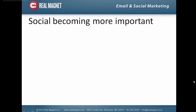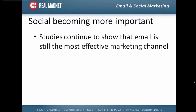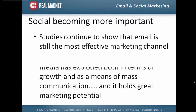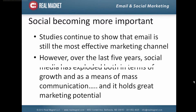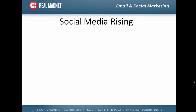Social is becoming much more important in terms of outbound communication. Studies continue to show that email is by far the most effective and dominant channel in marketing and communication. But over the last five years, social has exploded in terms of its reach, and it's becoming a critical component of outbound communications efforts. Depending on who you're communicating with, social can become an equal if not predominant way of communicating to your customers, prospects, and members.